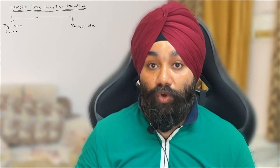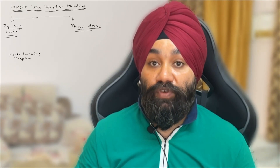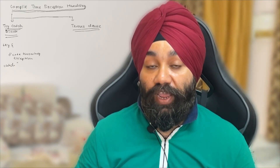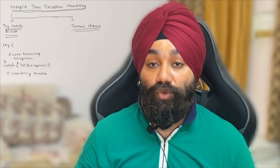Now let's talk about the ways to handle runtime and compile-time exceptions. There are two ways to handle compile-time exceptions. The first way is to use a try-catch block around the code that is throwing a compile-time exception — the code will not compile until we wrap it in a try-catch block.